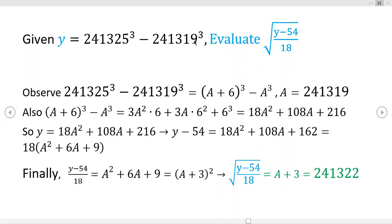So again, super large numbers, and we're supposed to evaluate this expression here that has a radicand that depends on y. This is the square root of y minus 54 over 18.